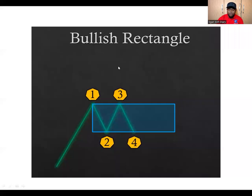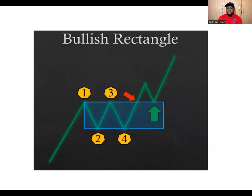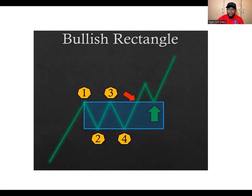Once you see this pattern, your entry will be at the green arrow on the retest. Your stop loss will be on the two and four — that lower level. Two or three times your stop loss should be your take profit. That is the bullish rectangle — a breakout to the top, a continuation of the trend to the bullish side.